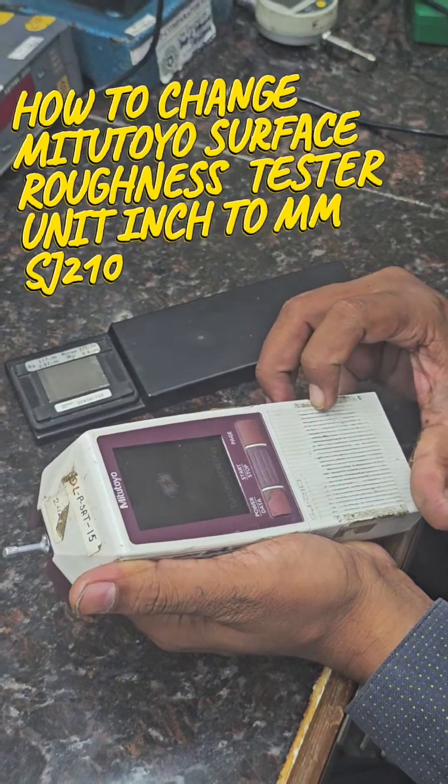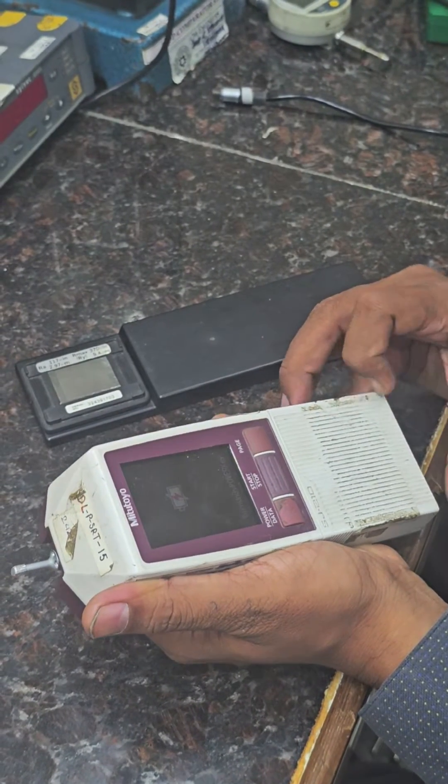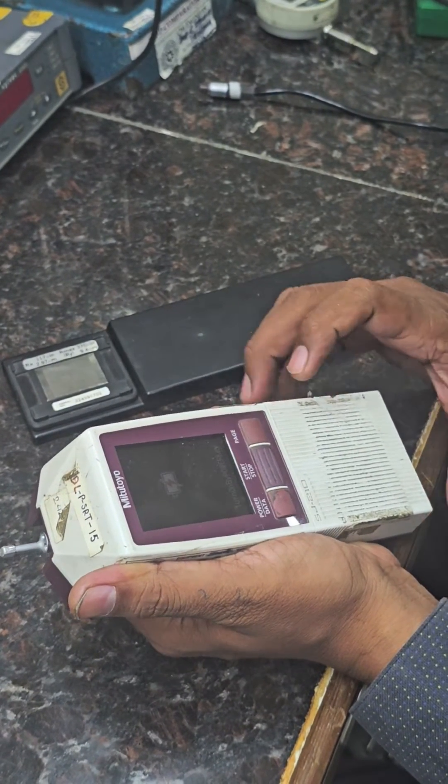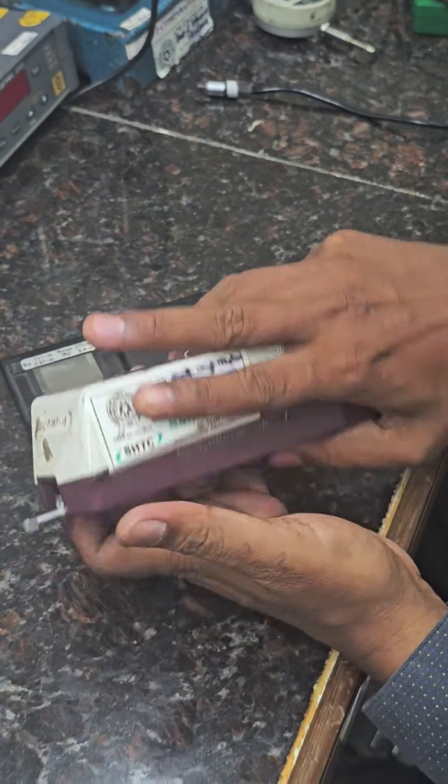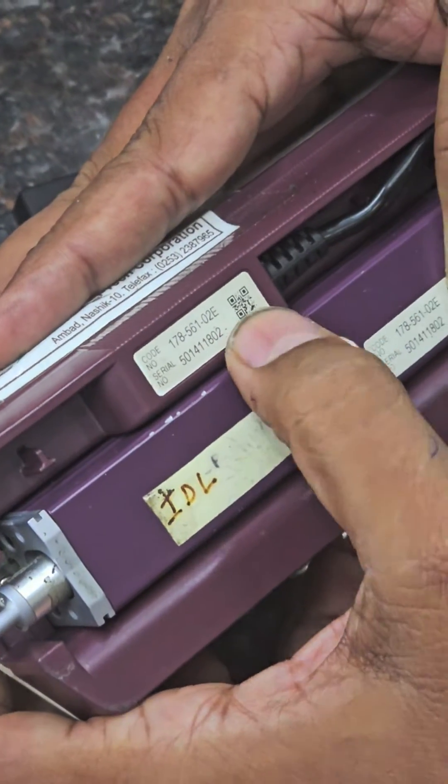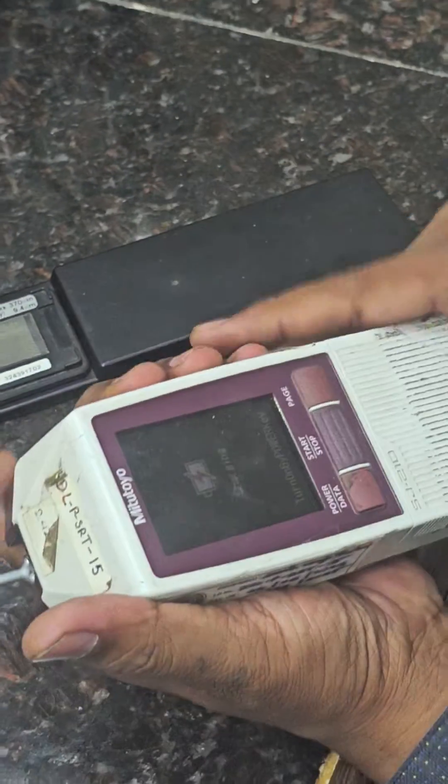Welcome again. Today we are going to learn how to change the unit of Metative surface roughness tester, model number 178561-02E. This is Metative roughness tester.